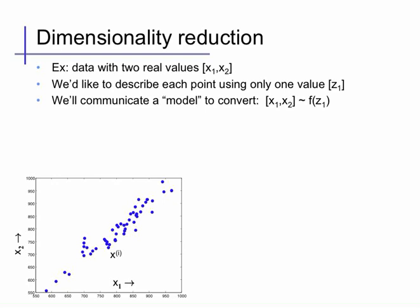As usual, we'll illustrate this with a very small feature space so that we can plot it. We'll imagine we have data with two real values x1 and x2, and we'd like to compress these to a smaller dimensional space — say, one real value z. If we were to communicate only one real value zi for each data point xi in two-dimensional space, we could do so by first communicating a model f that tells our receiver how to convert the single real number z into a vector x. Then we communicate just that model and only one real value per data point, compressing our data space by about a factor of two.